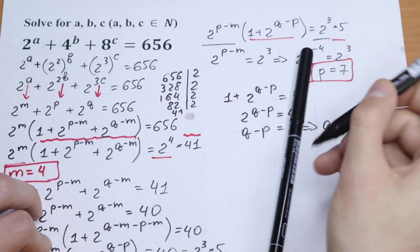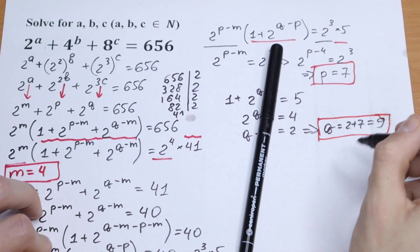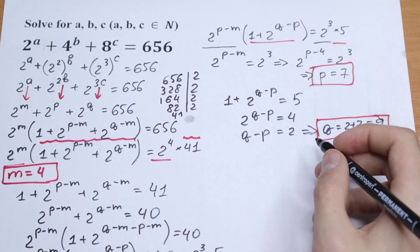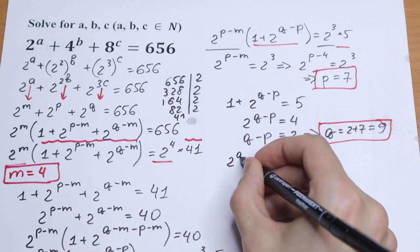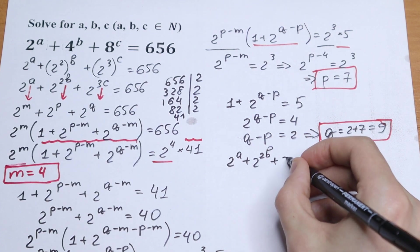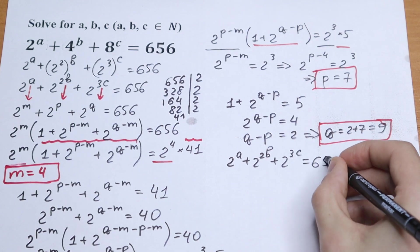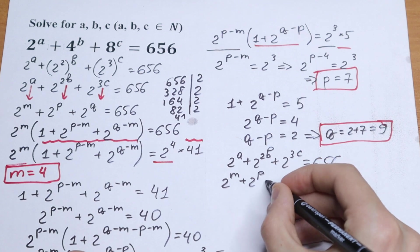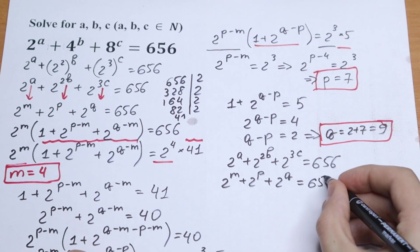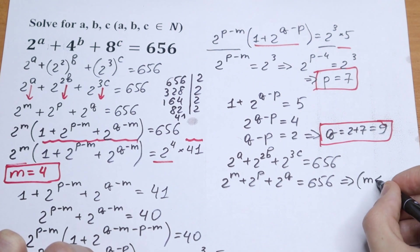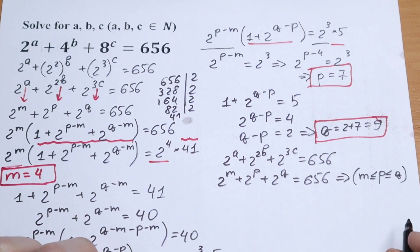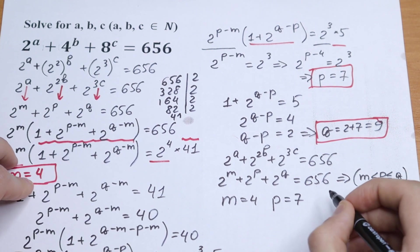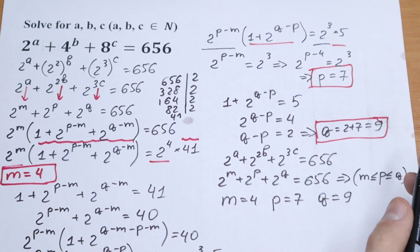We have found all values: m equals 4, p equals 7, and q equals 9. But our original equation is in terms of a, b, and c. Recall that 2 to the power a, plus 2 to the power 2b, plus 2 to the power 3c equals 656, and also 2 to the power m, plus 2 to the power p, plus 2 to the power q equals 656, where m is less than or equal to p, less than or equal to q.